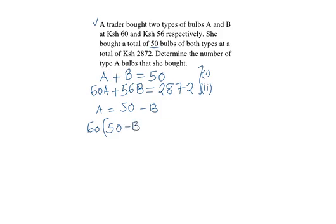We open the brackets and we'll have 3,000, that is 60 multiplied by 50, minus 60B plus 56B is equals to 2,872.